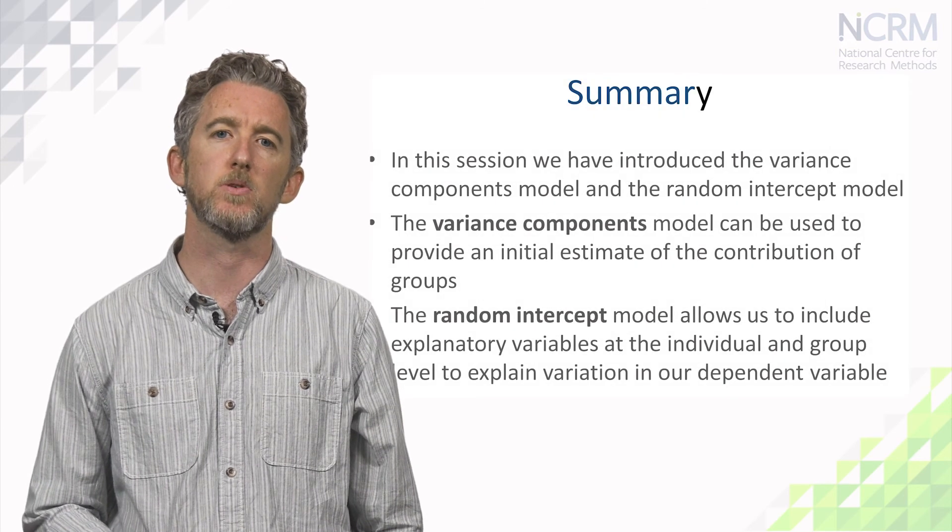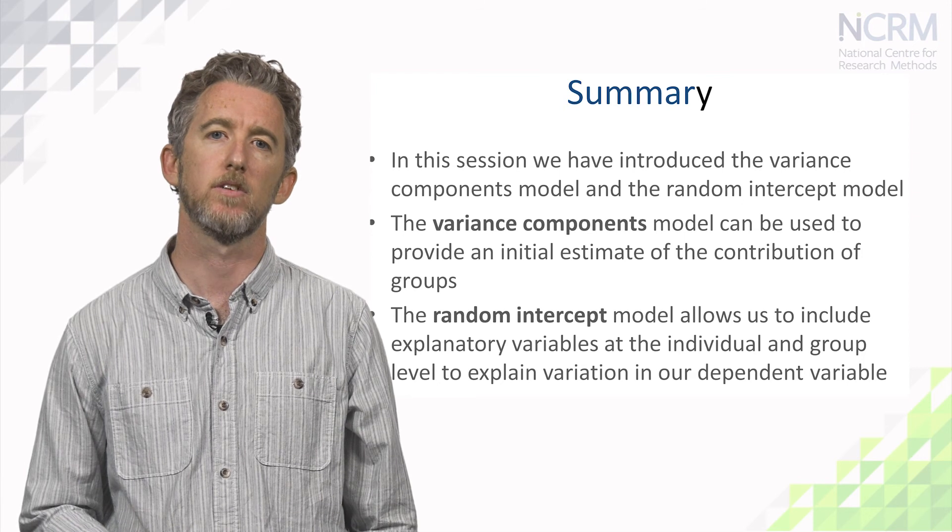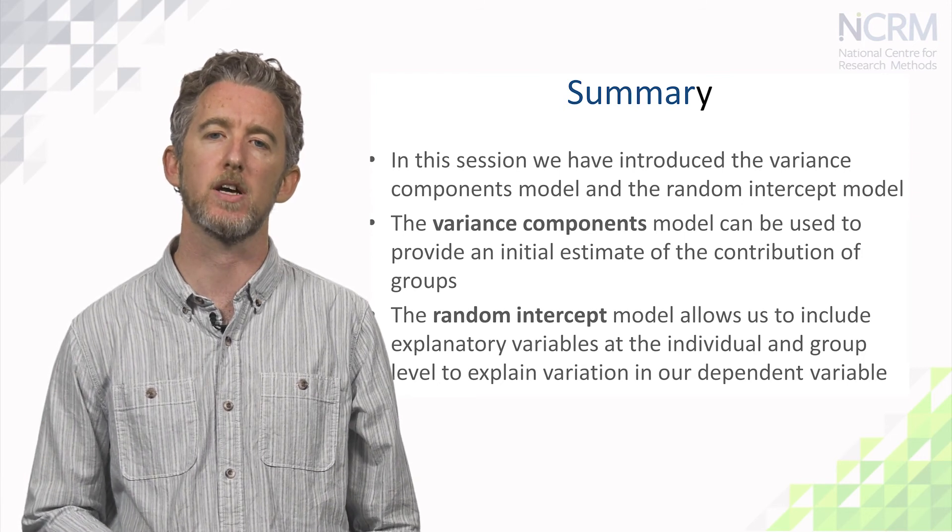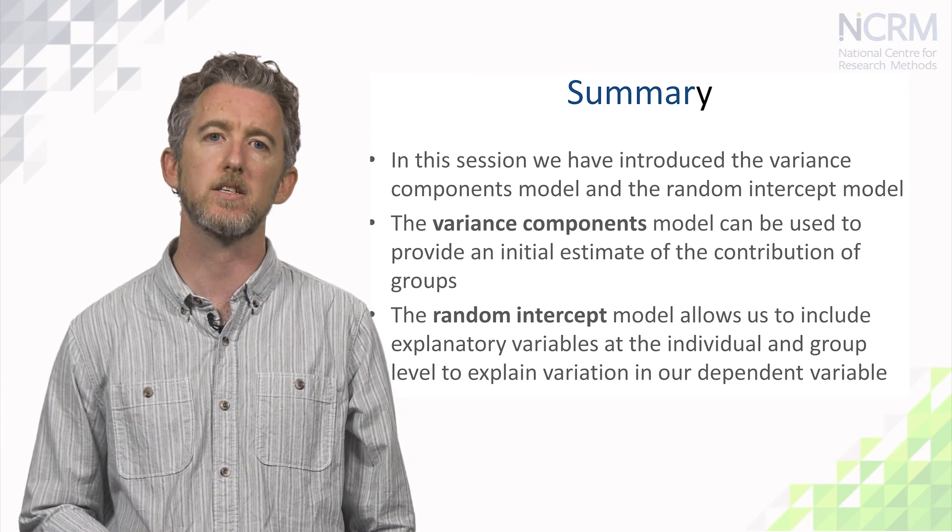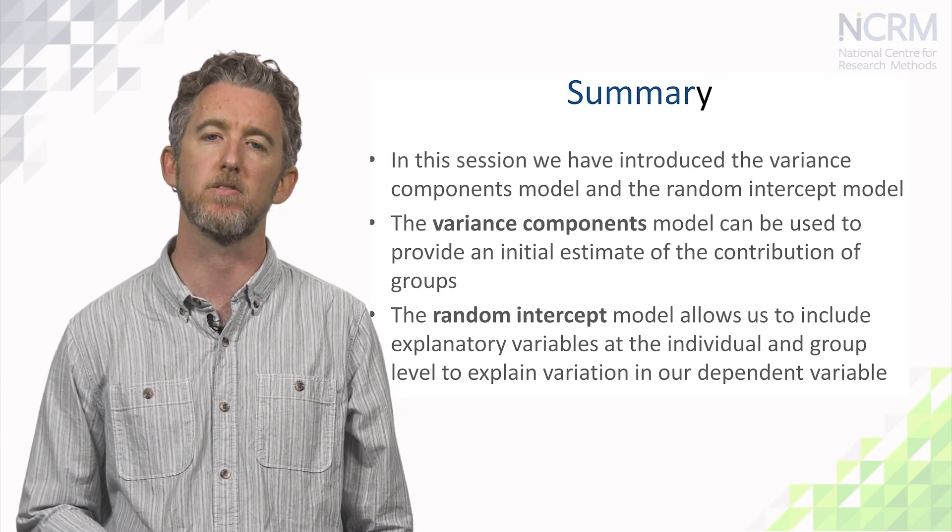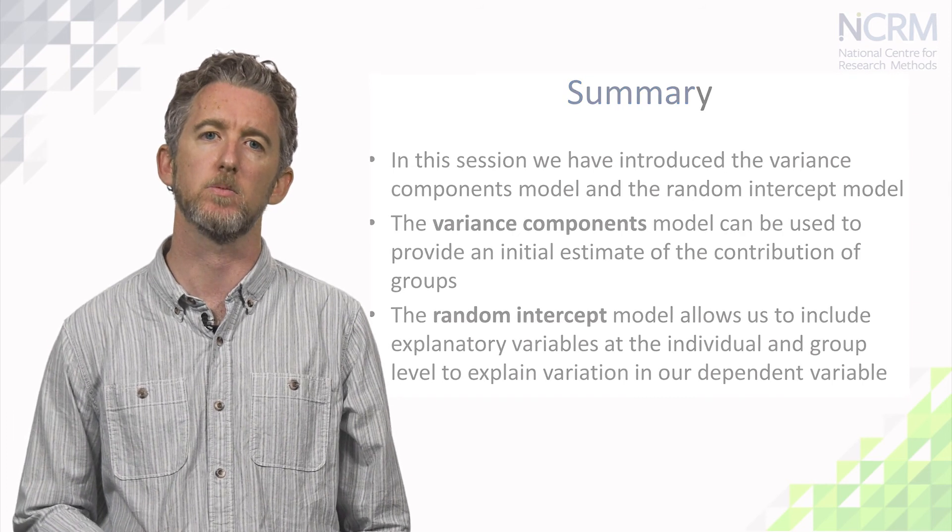So, in this session, we've introduced the variance components model and the random intercept model. The variance components model can be used to provide an initial estimate of the contribution of groups. The random intercept model allows us to include explanatory variables at the individual and group level, to explain variation in our dependent variable.